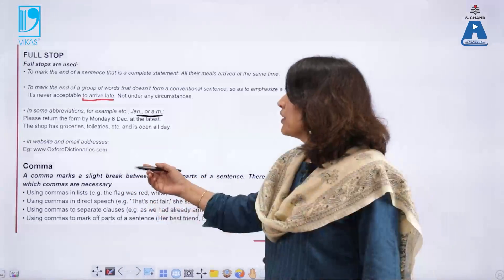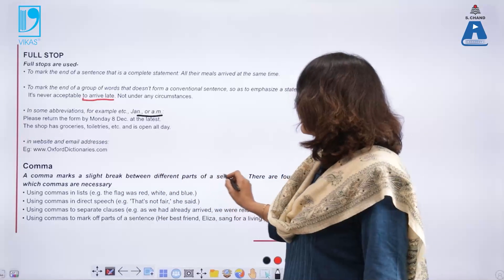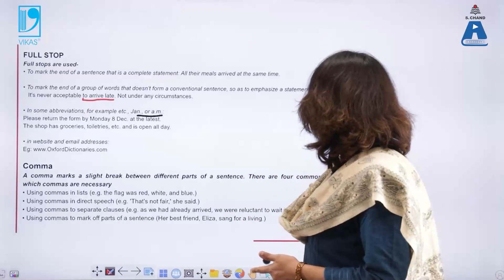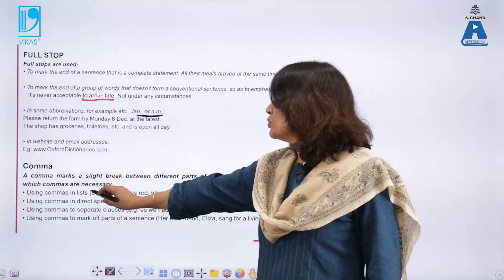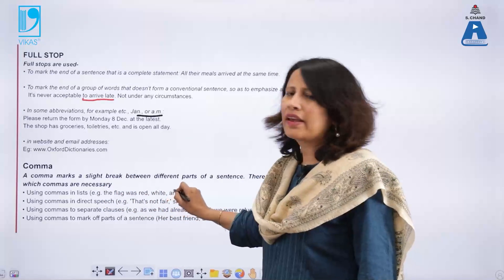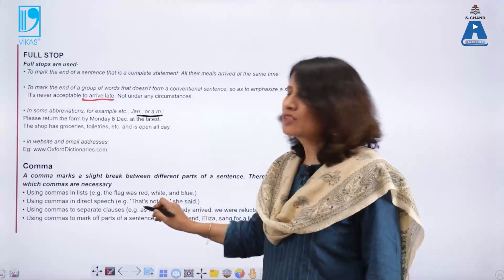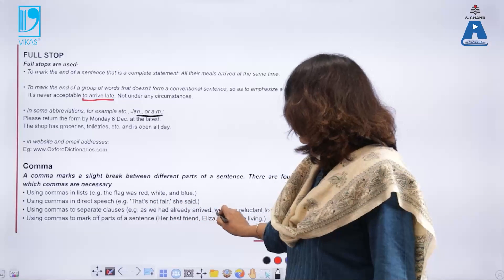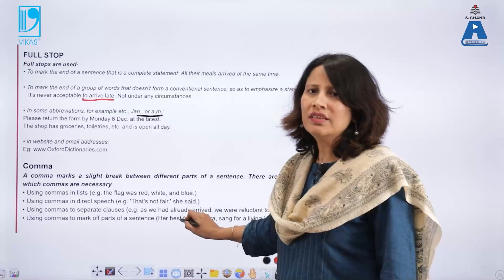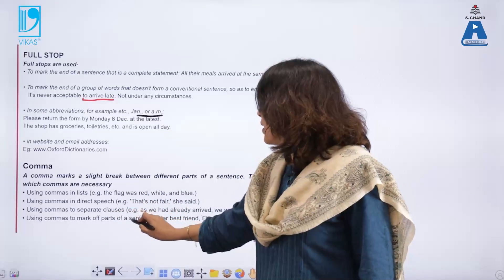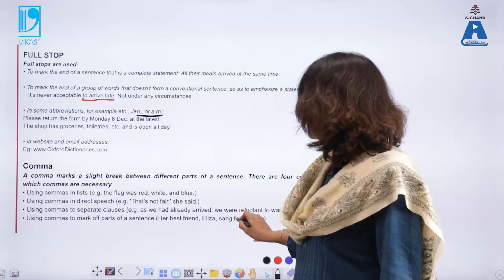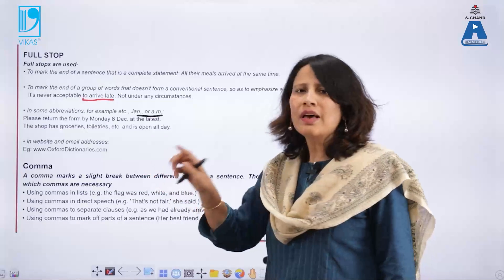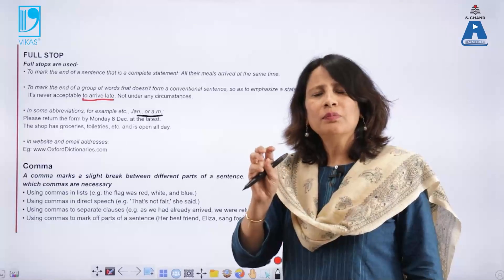Moving ahead, we have the comma. A comma marks a slight break between different parts of a sentence — wherever we need to show a slight pause or break, we use a comma. There are four main occasions where commas are necessary. Using comma in lists: 'The flag was red, white and blue.' Using comma in direct speech: 'That's not fair,' she said. Using comma to separate clauses: 'As we had already arrived, we were reluctant to wait.' Using comma to mark off parts of a sentence: 'Her best friend, Eliza, sang for a living.' Using a comma is essential to show breaks in a sentence where we need to emphasize a particular part.